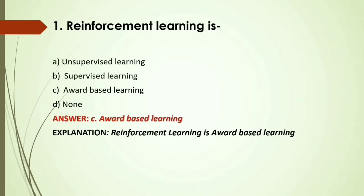MCQ: Reinforcement learning is — A) Unsupervised learning; B) Supervised learning; C) Award-based learning; D) None. Answer: C, award-based learning — reinforcement learning is award-based learning.